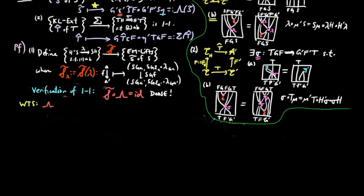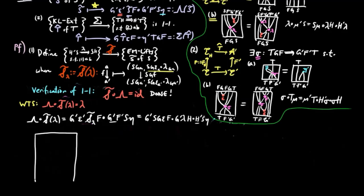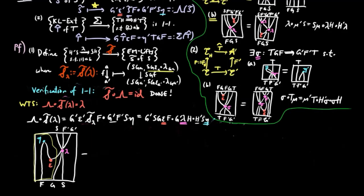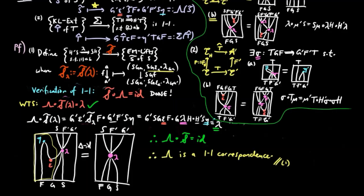Next, to show that S̃ is the right inverse of Λ, by definition Λ(S̃(λ)) equals the following natural transformation. Recall that the counit ε'_{S̃(λ)} equals S·G·ε · λ_G. So we rewrite this expression as G'·S·G·ε·F · G'·λ_H · H'·S·η. Giving the string representation, we use the triangle identity for the adjoint situation FG, which gives us back λ. Therefore, S̃ is the right inverse of Λ, and thus Λ is a one-to-one correspondence, finishing the proof of one.